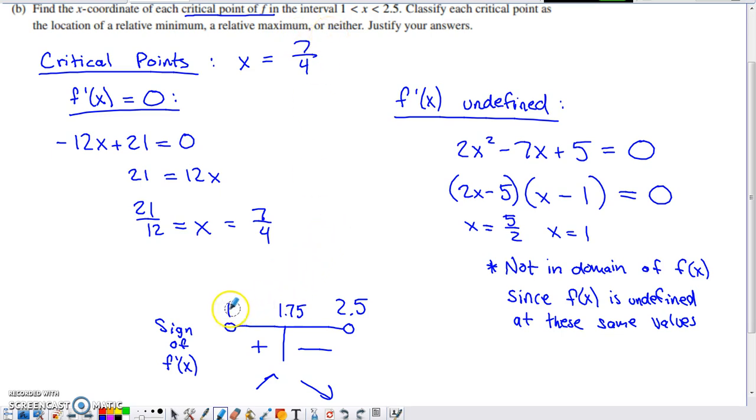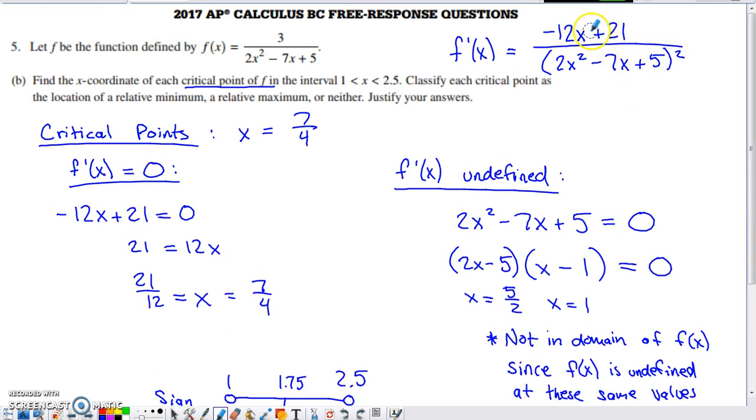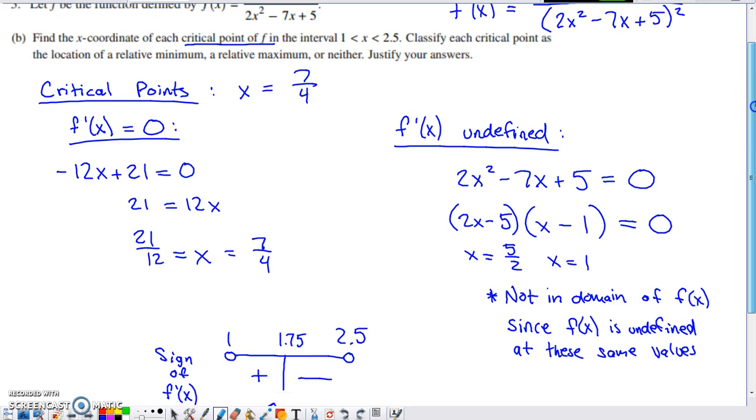Well, if you pick a value between 1 and 7 fourths, which is 1.75, and you put it into the derivative here, a number like 1.25 into this numerator plus 21, divided by something that's always squared is going to give you a positive value for the numerator.